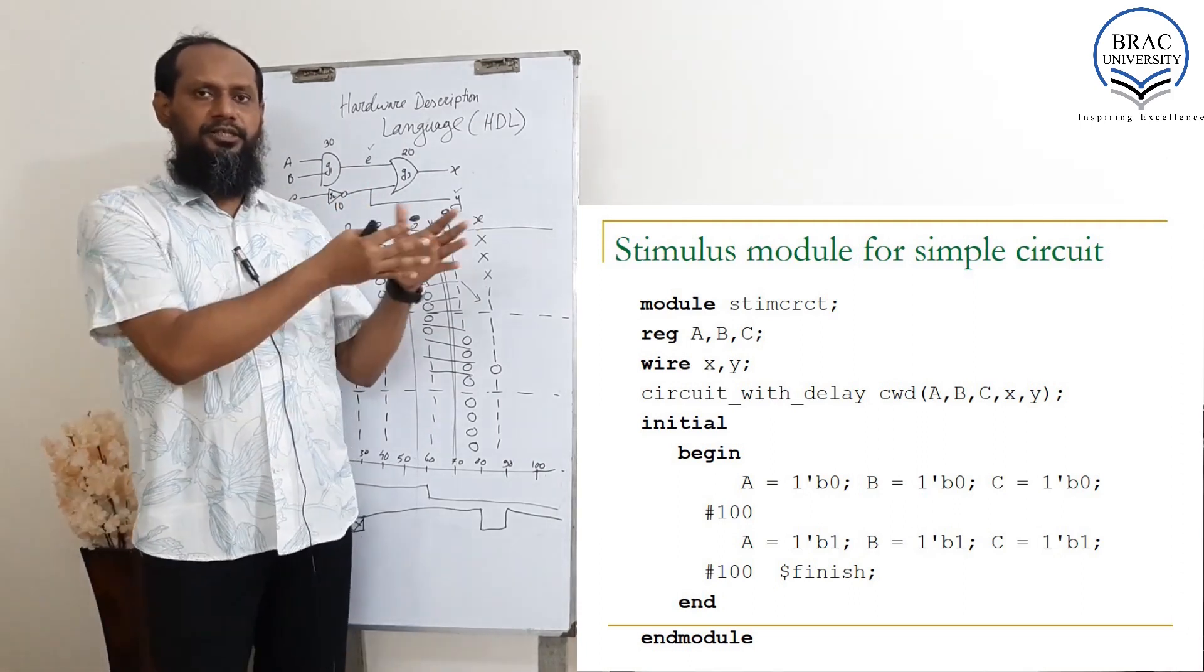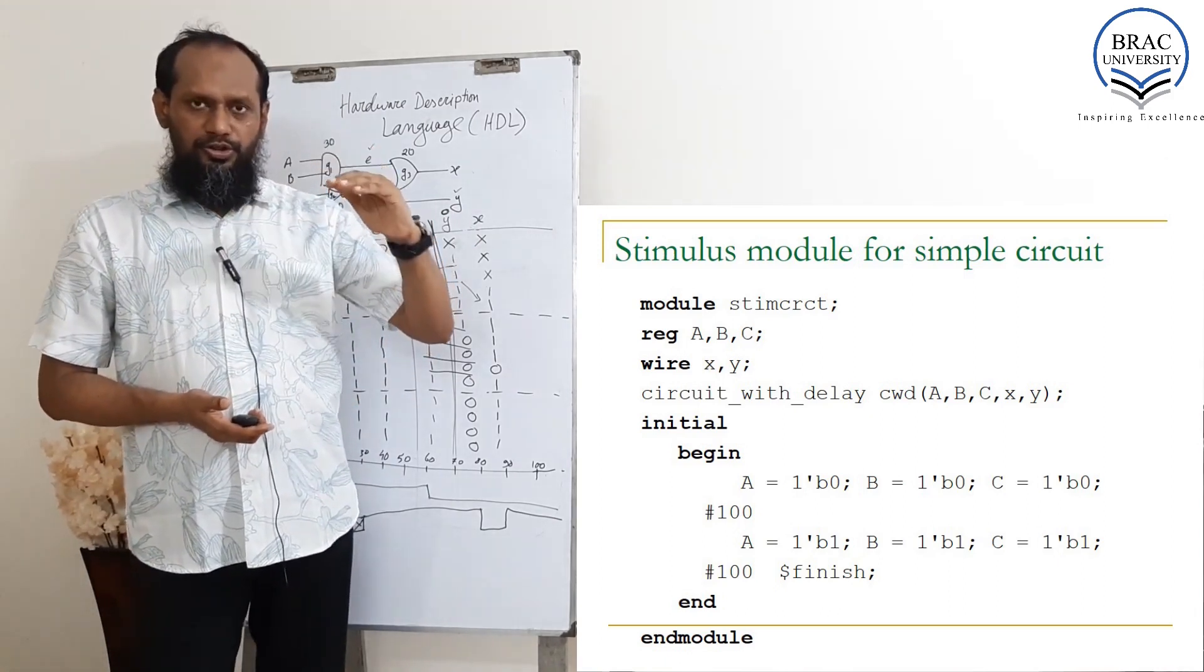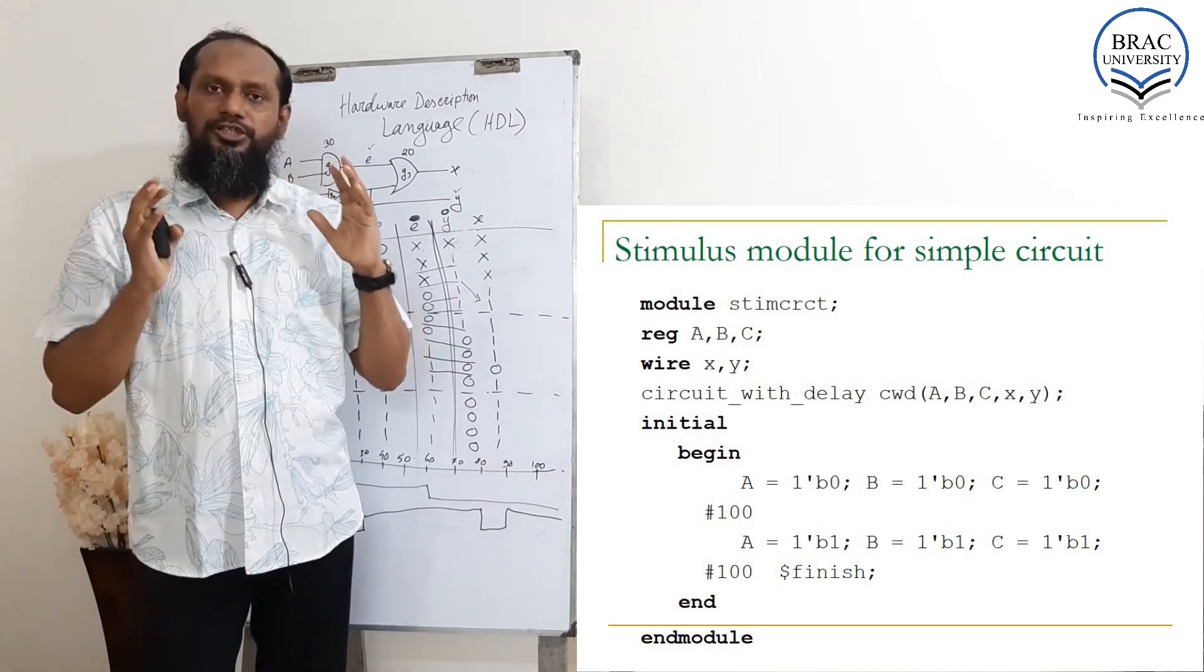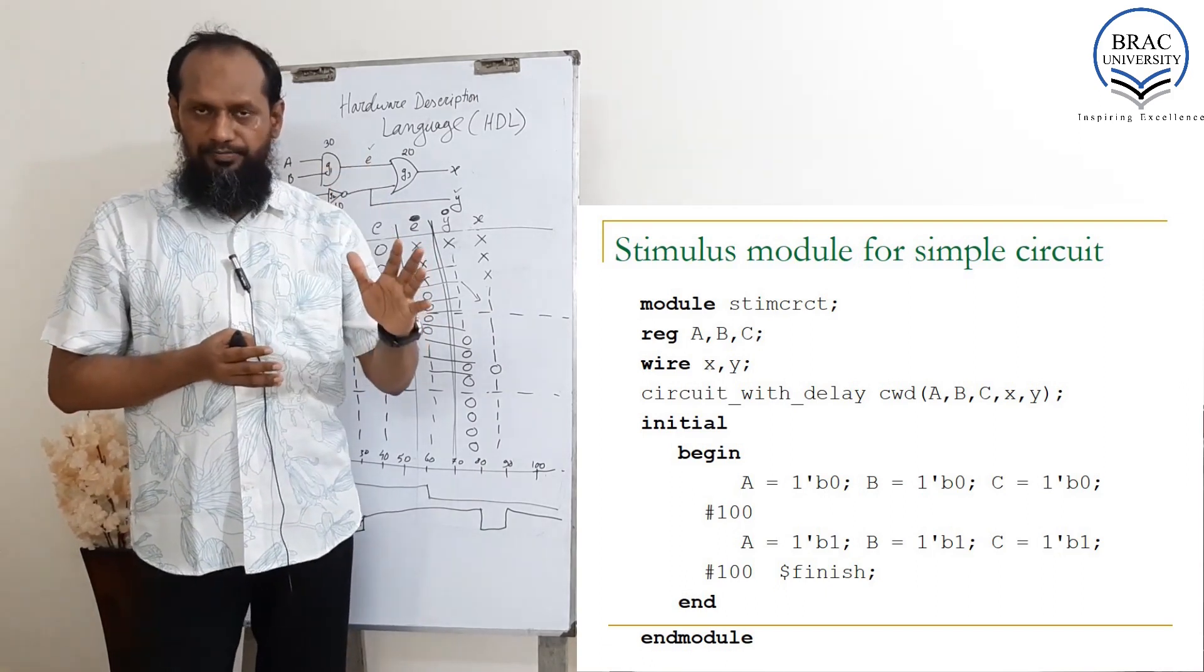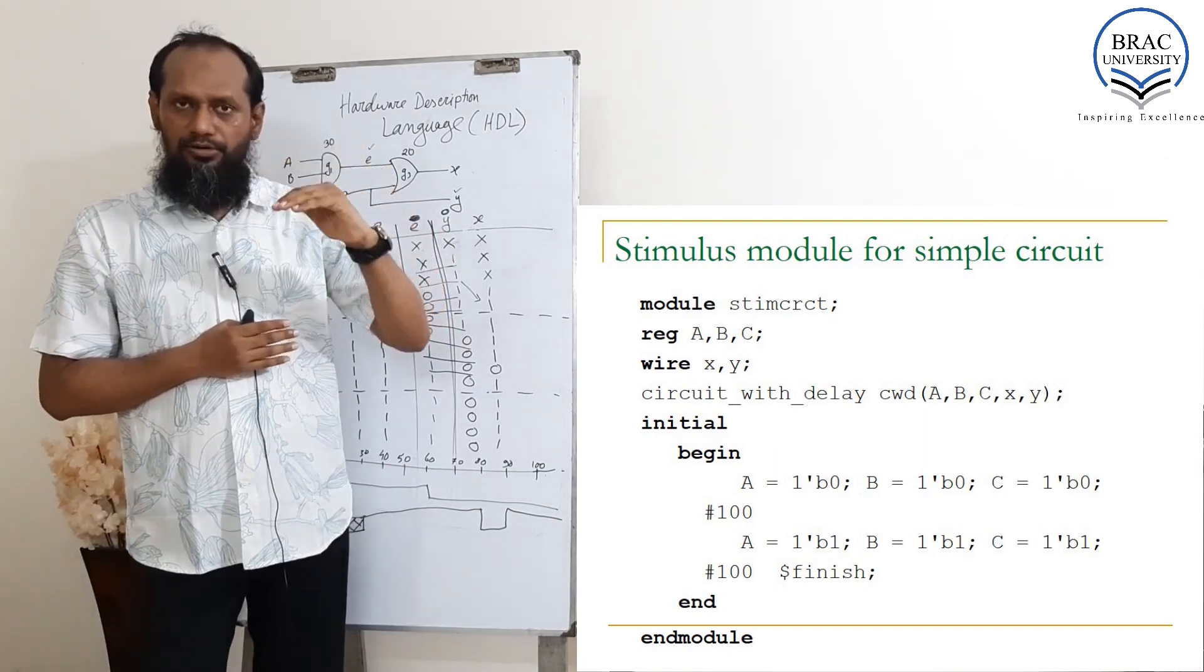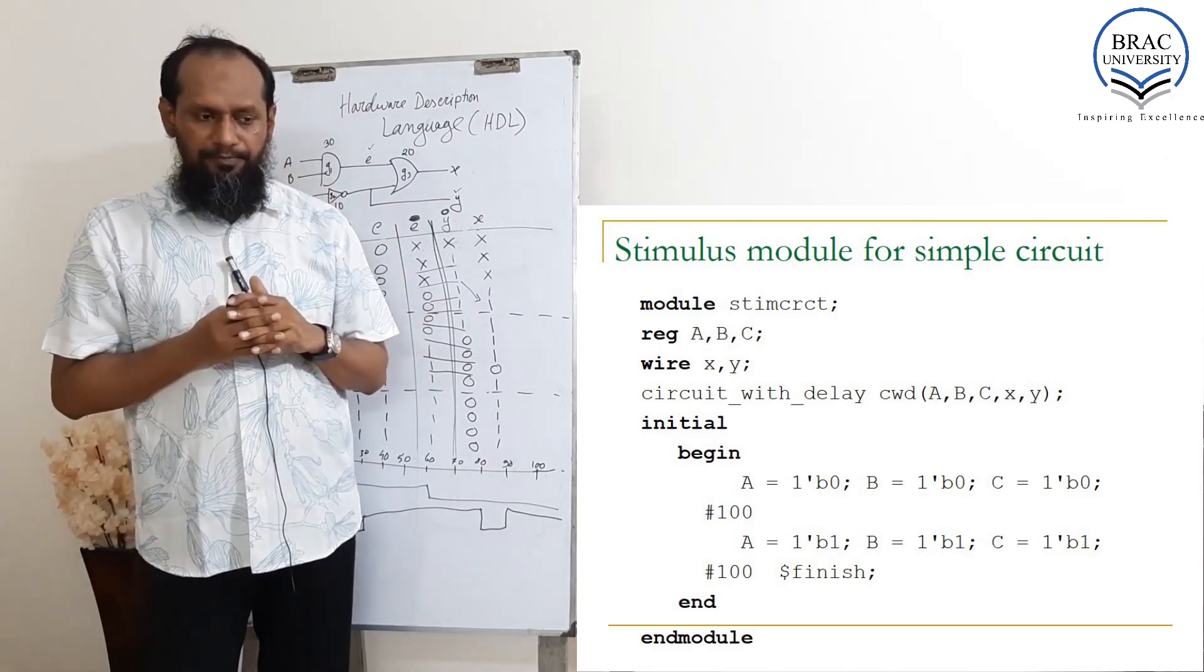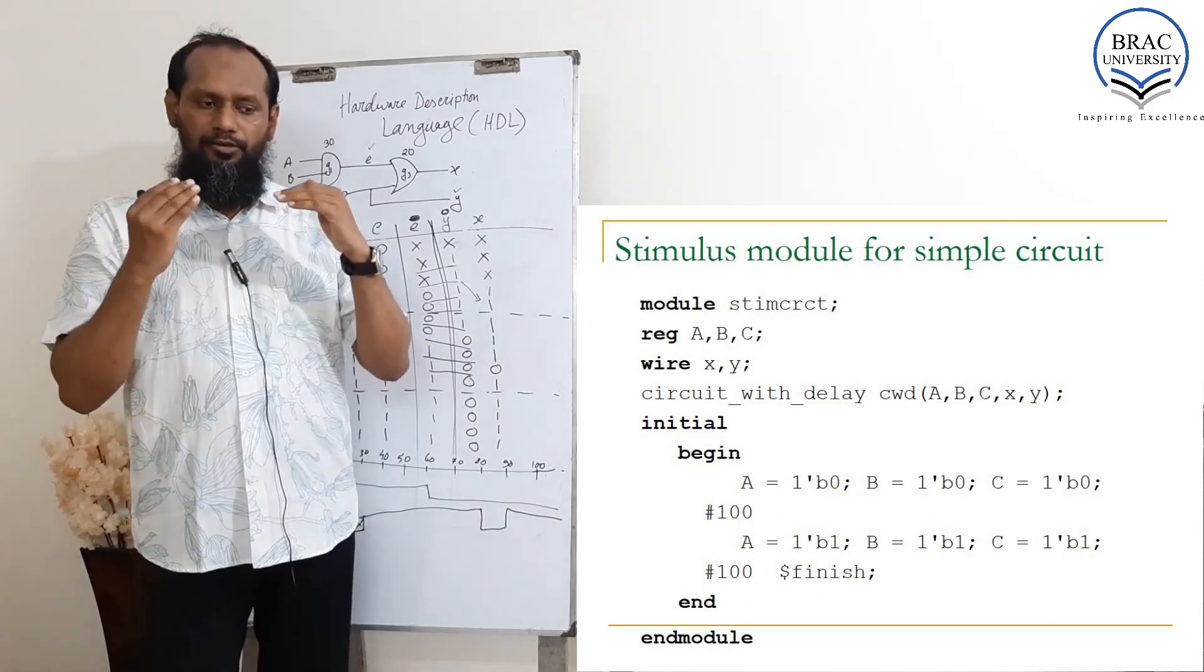In this example, you can see we used inputs A, B, C. We initialize A, B, C as 0 on 0 timing - without any delay, we give input A as 0, B as 0, C as 0. Then we give a delay, waiting for 100 nanoseconds. Then we change the value of A, B, C to 1, 1, 1.